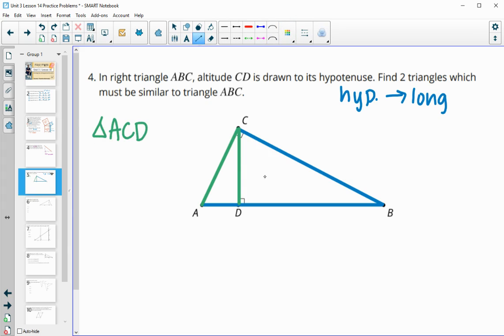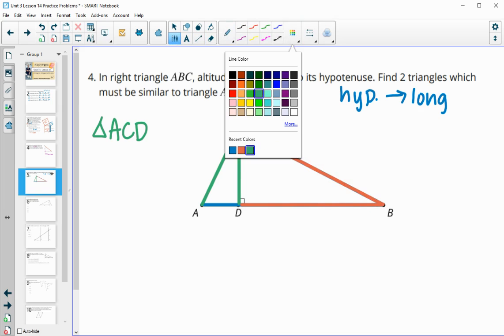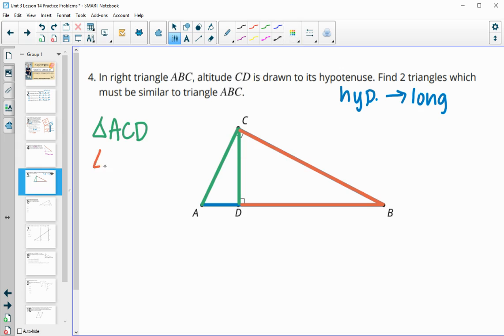And then if we do it again in this medium-sized triangle over here, we need the hypotenuse to the long leg. So the letter of those orders are CBD. So then triangle CBD is also similar to triangle ABC.